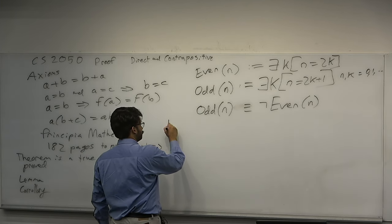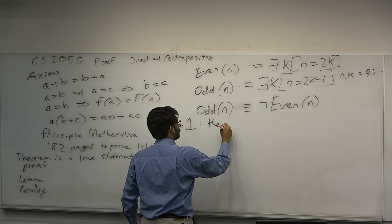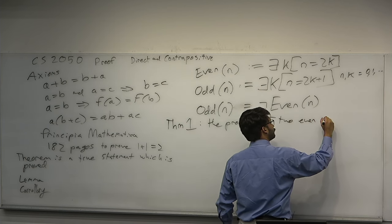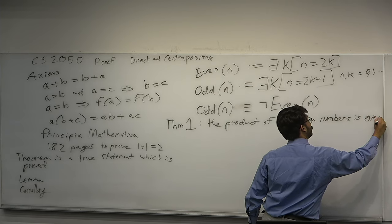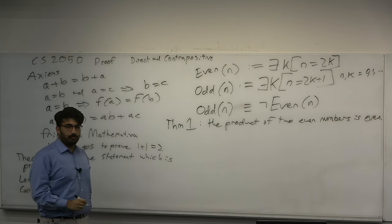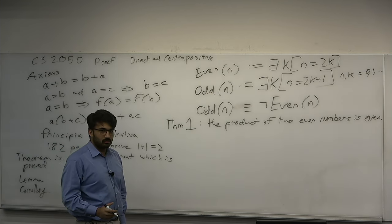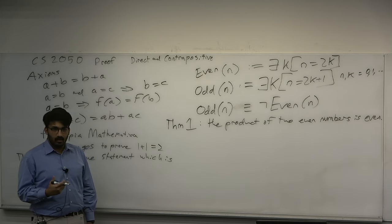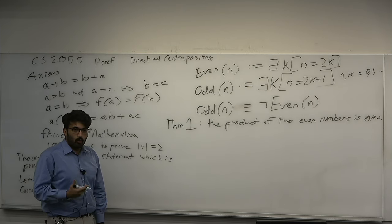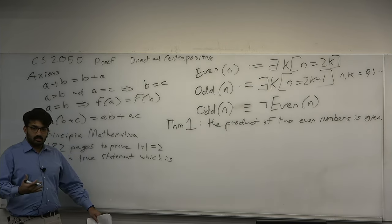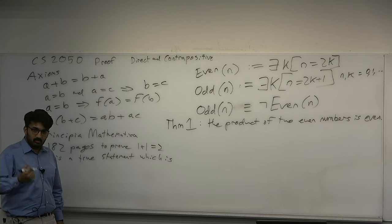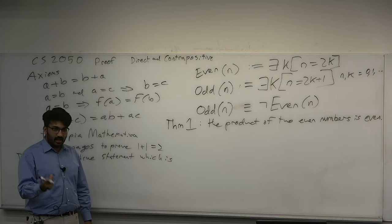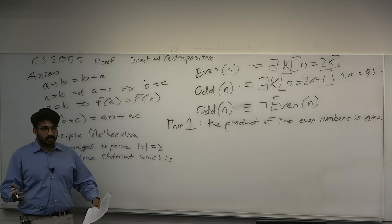Let's do our first theorem. Theorem 1: the product of two even numbers is even. Pay very close attention to English. Writing proofs is nothing like writing code. A proof, above all else, is an object of beauty — it is supposed to be inspiring. You should get a little high when you finish a proof. The writer makes small jumps in logic, and at each step the reader digests whether it's true.